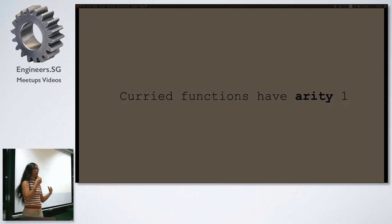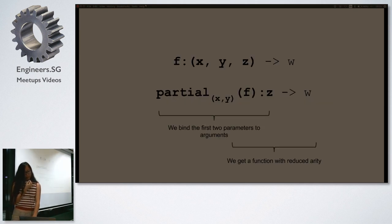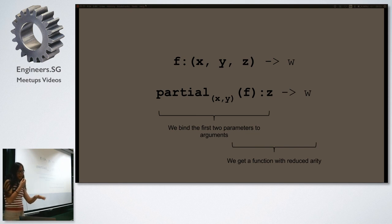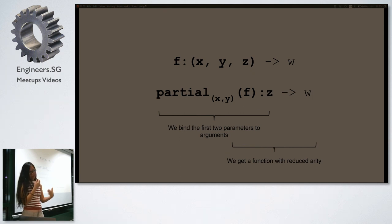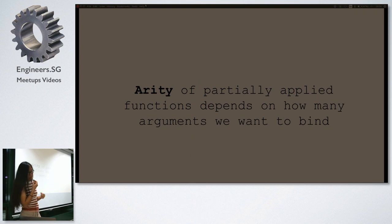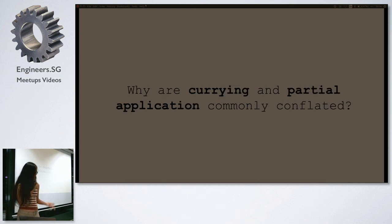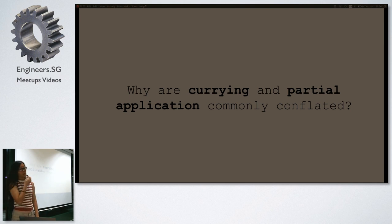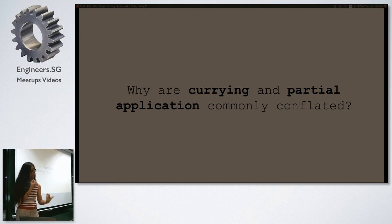Arity is basically the number of arguments your function takes. Curried functions are arity one — they only take one argument. Partial application is a related concept: if you have f(x, y, z) and partially apply x and y, you're binding the first two parameters to some value, getting back a function of reduced arity that takes only one argument. In languages that support currying, you can do partial application with curried functions.